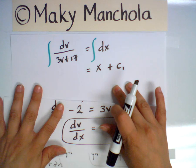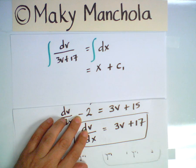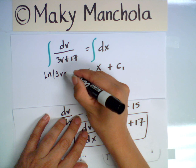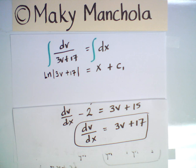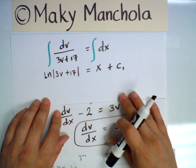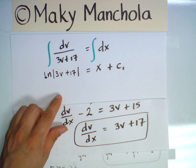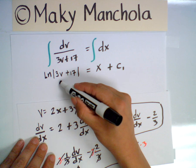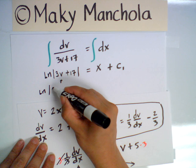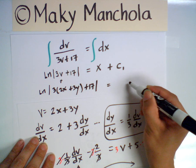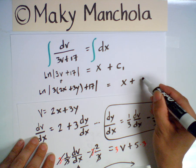The constant C1 will change form; our final integration constant will be called C. We would like to get back to the original variable, which is 2x plus 3y. Remember, v was 2x plus 3y. So substituting back, we get (1/3)·ln|3(2x plus 3y) plus 17| equals x plus C1.